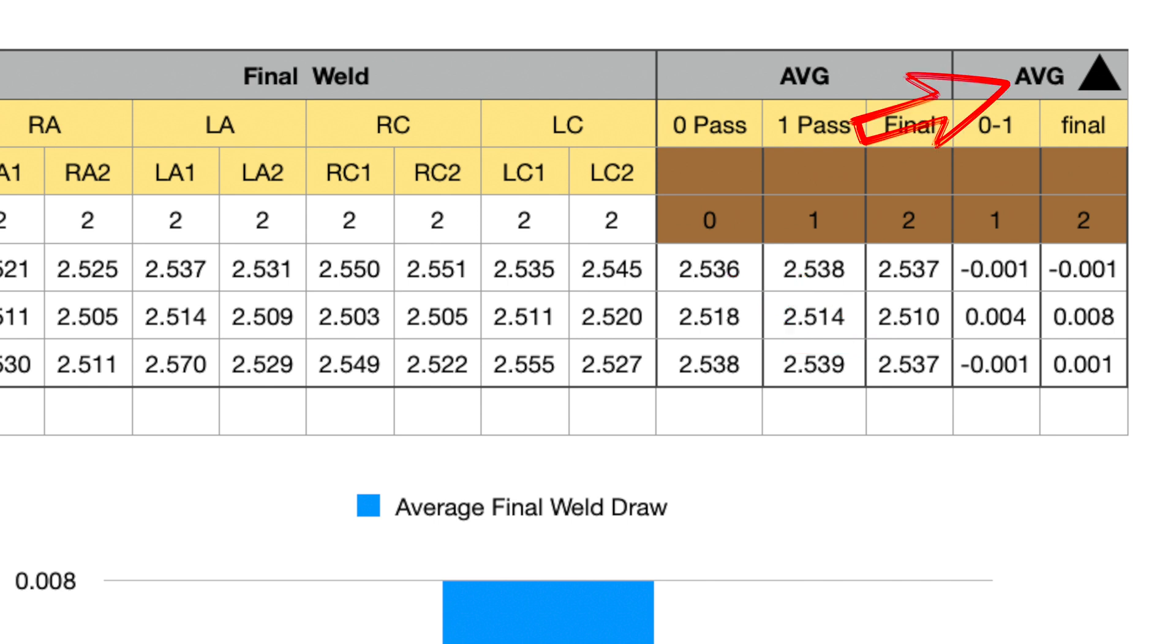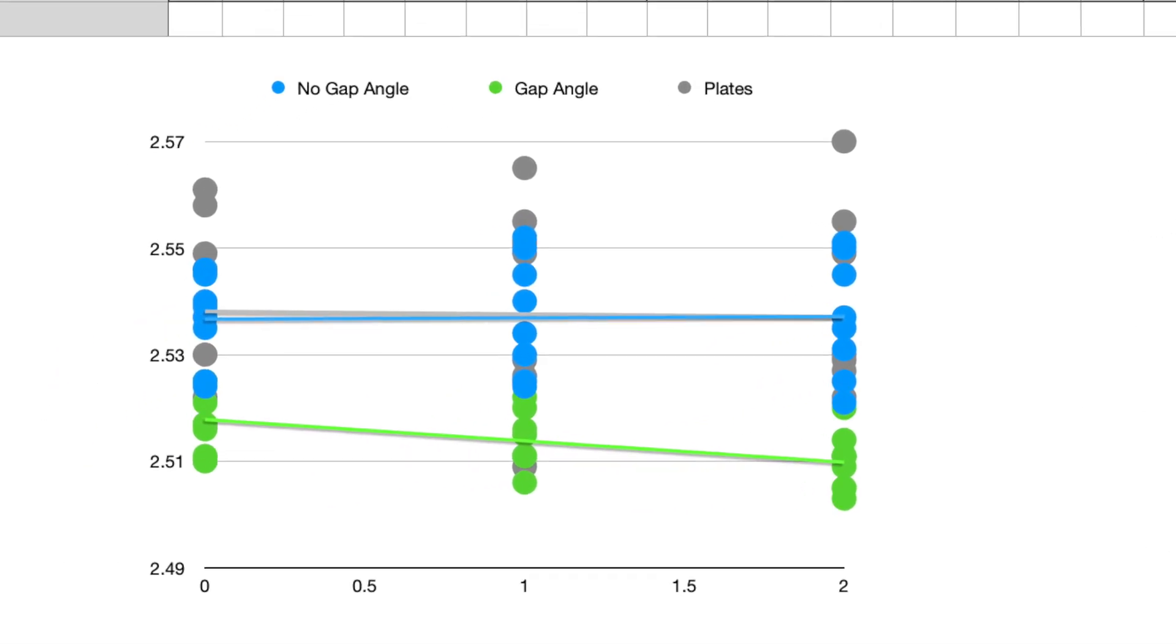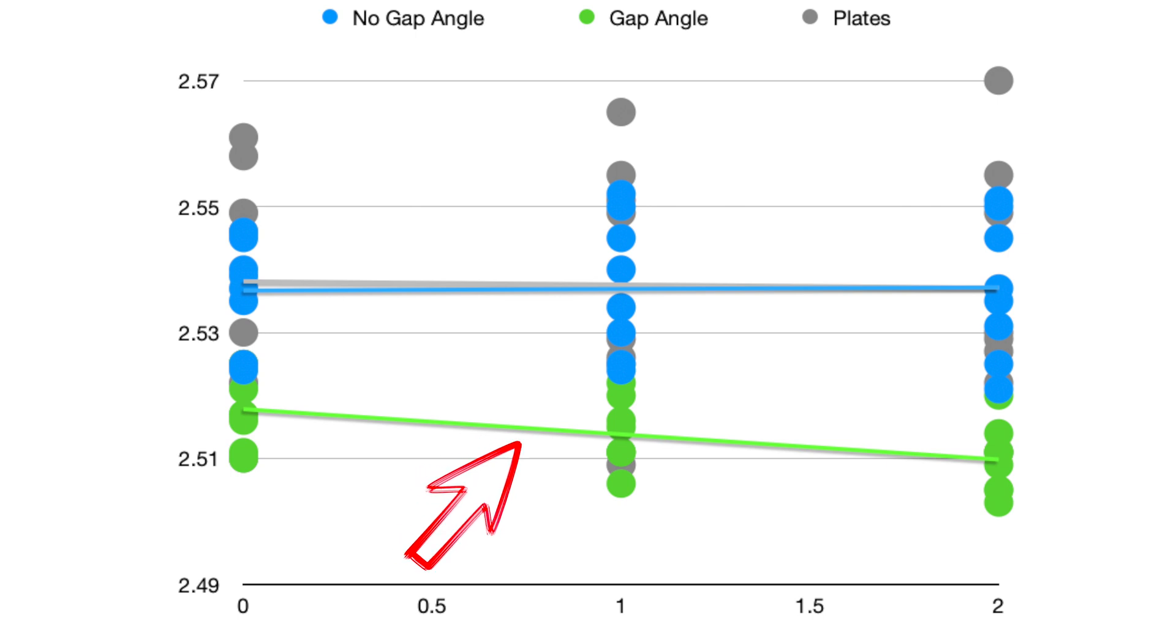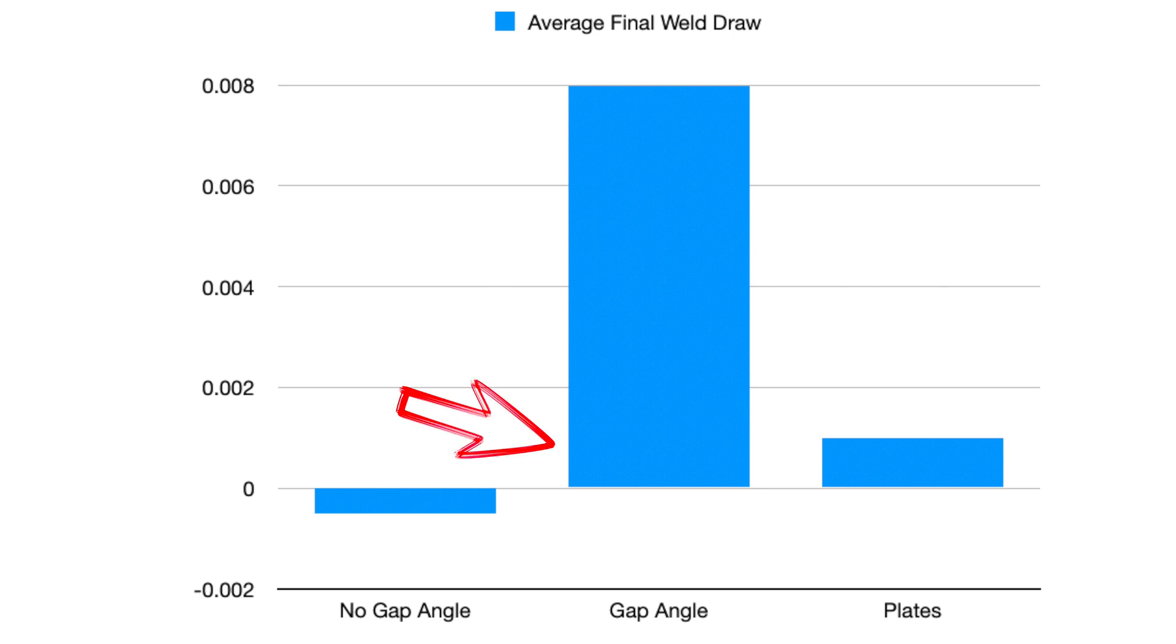Now as far as the delta average or the difference indicating what the actual weld draw was between these tests, you can see the no-gapped angle had a negative 0.001 weld draw, indicating that it actually increased in size instead of decreased in size. The gapped angle had 8 thou of average weld draw, indicating there was some amount of change because of the weld geometry. And then the plate version had about 1 thou of dimension reduction or weld draw in that joint as well. The chart here really makes it apparent that the gapped angle had quite a bit more weld draw than the other two test cases, which is as expected.